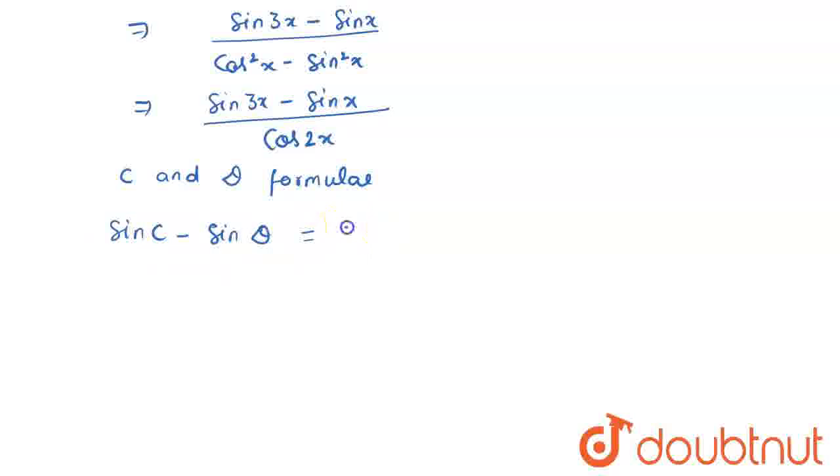So, here you must memorize it. The expansion for this is twice cos of c plus d whole divided by 2 into sin of c minus d divided by 2. This is a very standard formula.